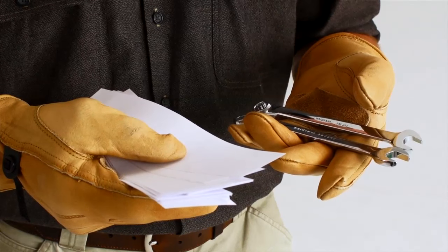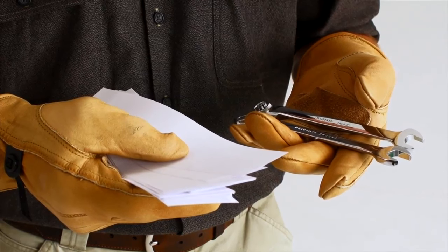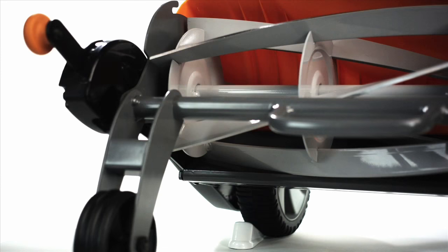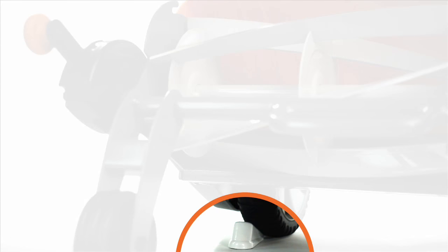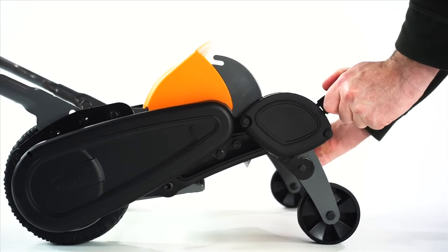To improve your reach, you may want to use a deep well socket or a regular socket with an extension. The reel spins when the mower moves forward, so be sure to block the wheels before you begin. Then raise your mower to the highest cut height position to improve access.